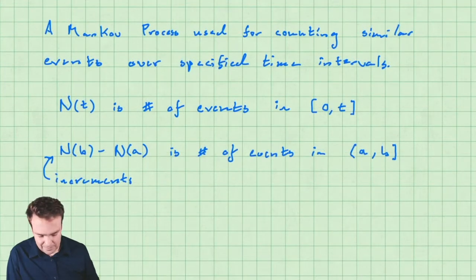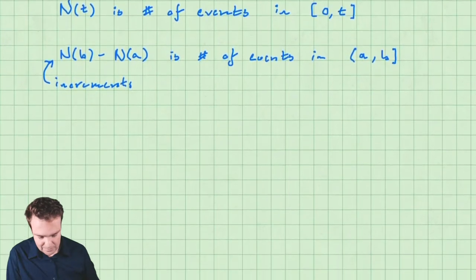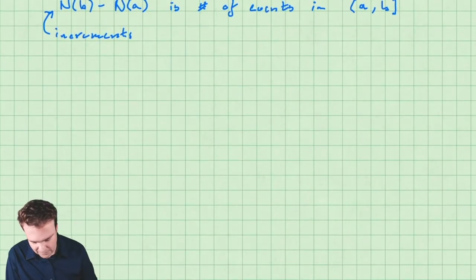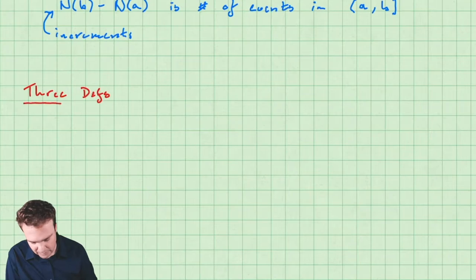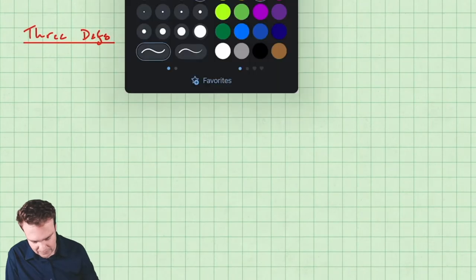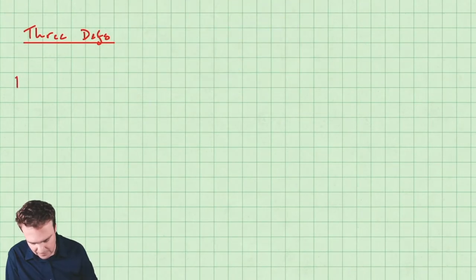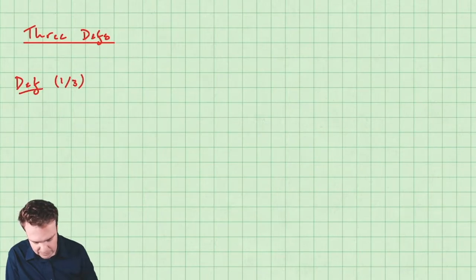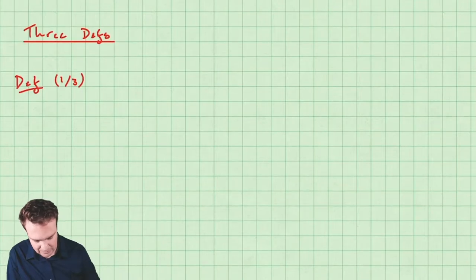You could describe today's lecture as the tale of three definitions. We're going to see three different, or seemingly different, definitions of a Poisson process — and they're all equivalent to each other. Let's start with the first one.